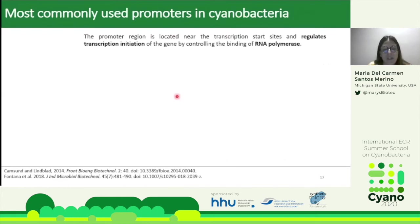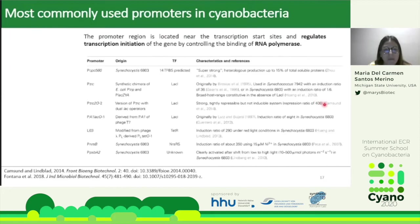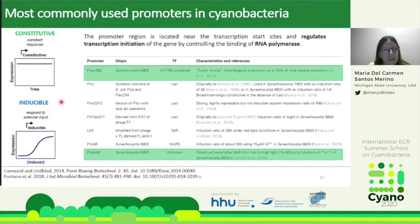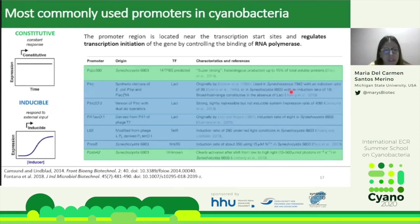Another important part of our constructions are promoters — regions located near the transcription start site that regulate transcription initiation by controlling RNA polymerase binding. This table shows the most commonly used promoters in cyanobacteria. Constitutive promoters provide constant expression; these include PCP560, a very strong promoter from Synechocystis, and PSBA2 from Synechocystis, a promoter from one of the Photosystem II subunits.